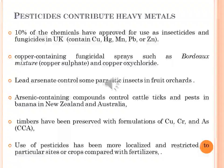Lead arsenate was used in fruit orchards for many years to control parasitic insects. Arsenic-containing compounds were also used extensively to control cattle ticks and pests in banana crops in New Zealand and Australia. Timbers have been preserved with formulations of copper, chromium and arsenic, and there are many sites where soil concentrations of these elements exceed background concentrations. Such contamination has potential to cause problems, particularly where sites are redeveloped for agricultural or non-agricultural purposes.